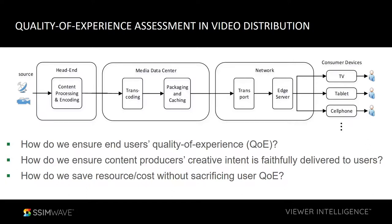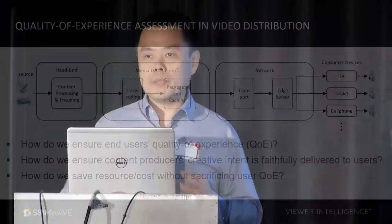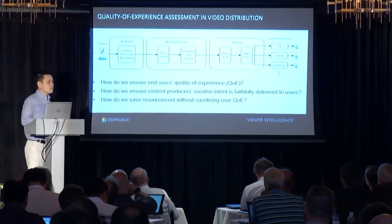Here I'm showing a very general framework of video distribution. You've got some source, some acquisition point, and then this source video goes through a head end with some encoding, transcoding, packaging, and so on. Then it goes to the network, and the network distributes all this video to individual users who are using TV, cell phone, or tablet to watch the video. The bigger question is: how are we going to do quality assurance of this video distribution system?